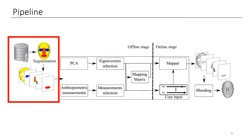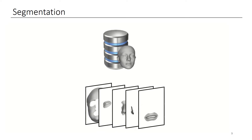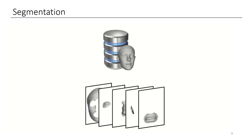In the offline stage, first we segment the face into different parts in order to focus the decomposition on a part-by-part basis instead of computing the PCA decomposition on the whole face. We segment each input face into five predefined parts. This spatial decomposition allows us to have eigenvectors for each part. Here are some examples from our dataset.